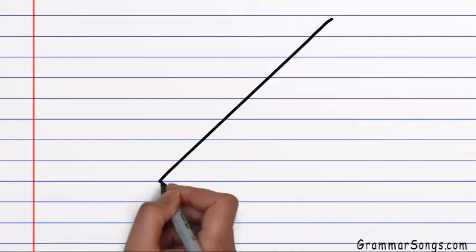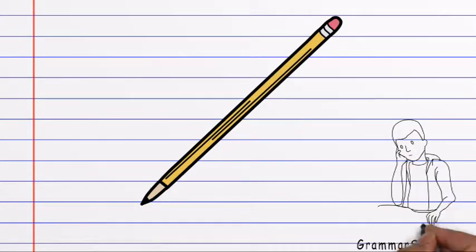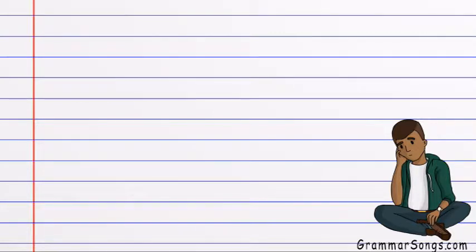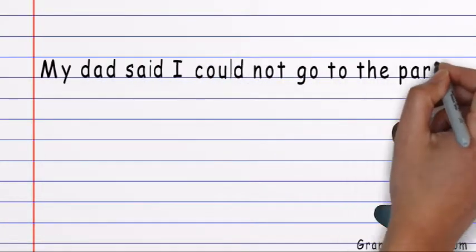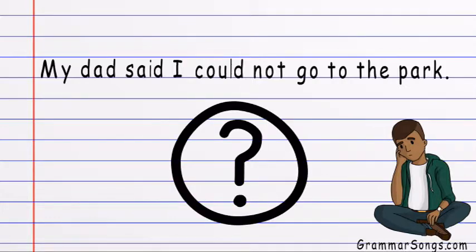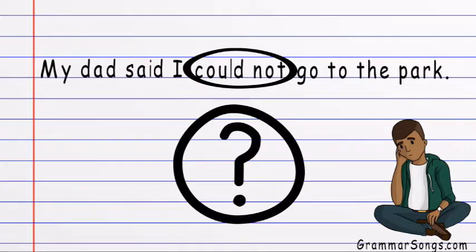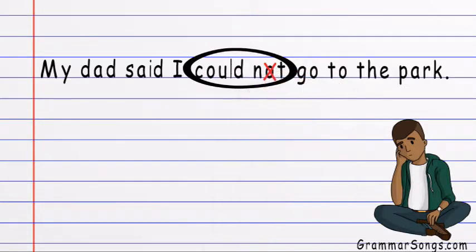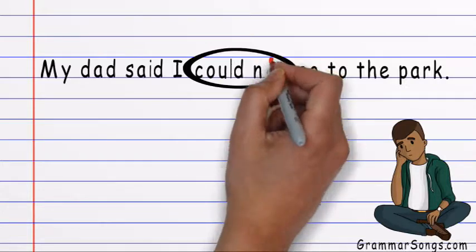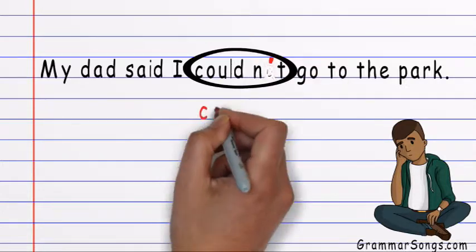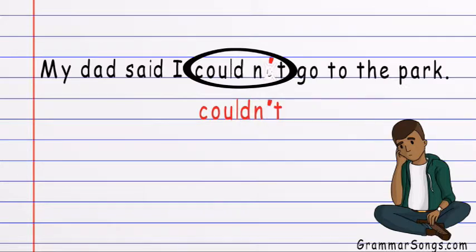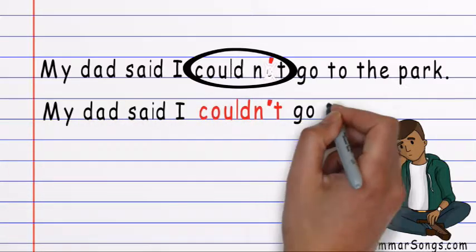We can also use contractions when we write. Let's practice writing some sentences and combining words to form contractions. My dad said I could not go to the park. Did you see any place in this sentence where two words could be combined to form a contraction? The words 'could' and 'not' can be combined to form a contraction. To form a contraction from the words 'could not,' we eliminate the O in 'not' and put an apostrophe in its place, forming the contraction 'couldn't.'